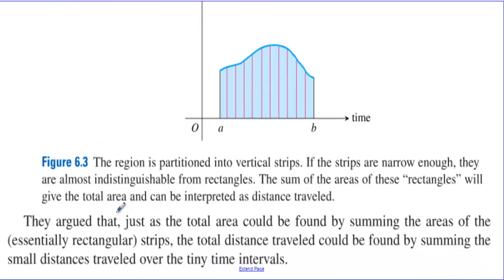They argued that just as the total area could be found by summing the areas of the essentially rectangular strips, the total distance traveled could be found by summing the small distances traveled over the tiny time intervals. To get the entire interval, they could just add up tiny little time intervals — in other words, narrow little rectangles.